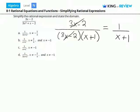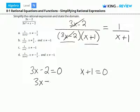We can find out by setting each of these two terms in the denominator equal to 0 and then solve for x. We have 3x minus 2 equals 0 and x plus 1 equals 0. Solving for x, we get 3x equals 2 and x is equal to 2 thirds, and we get x is equal to negative 1.